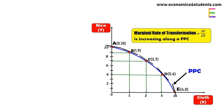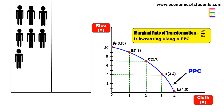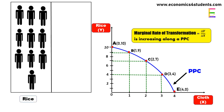But why is it so? Suppose the economy has 10 laborers and all 10 laborers are used in the production of rice. The economy is at point A, producing 0 units of cloth and 10 units of rice.